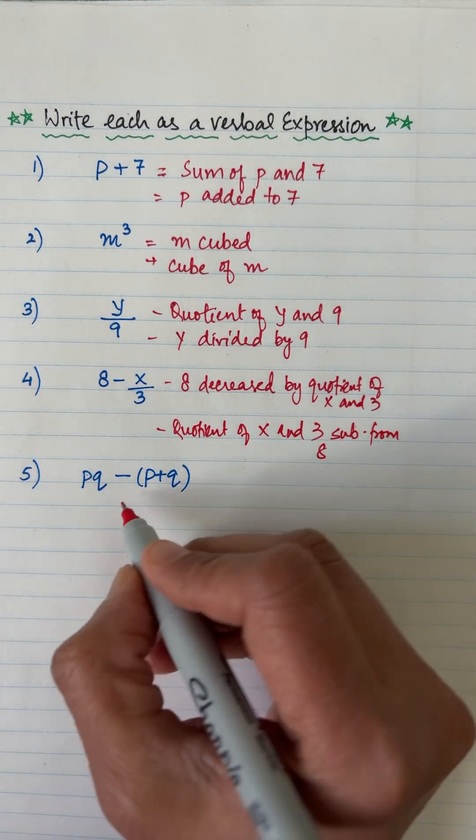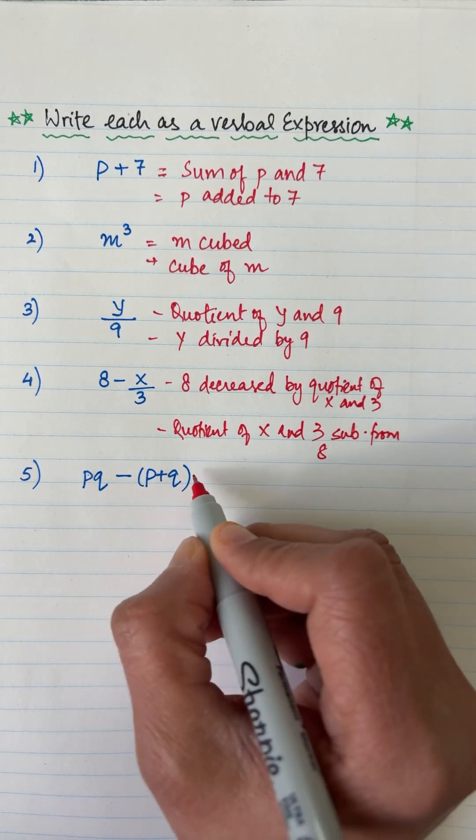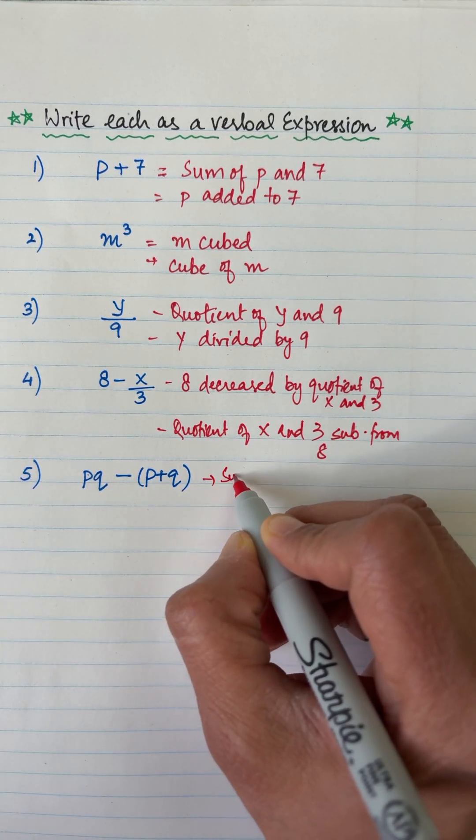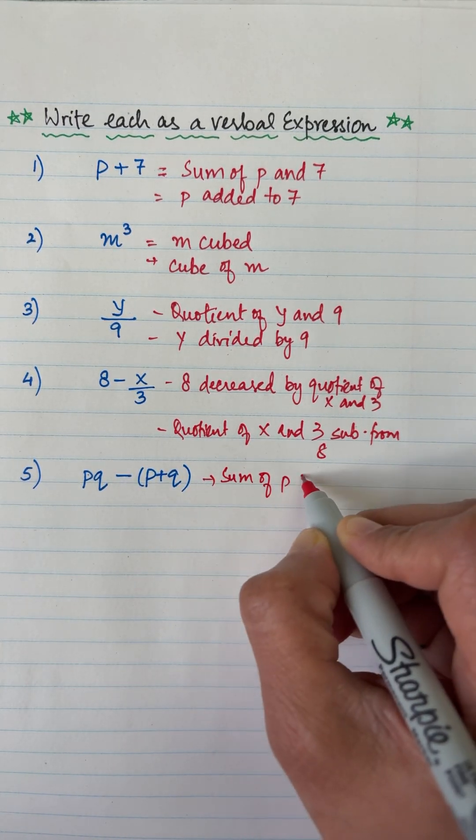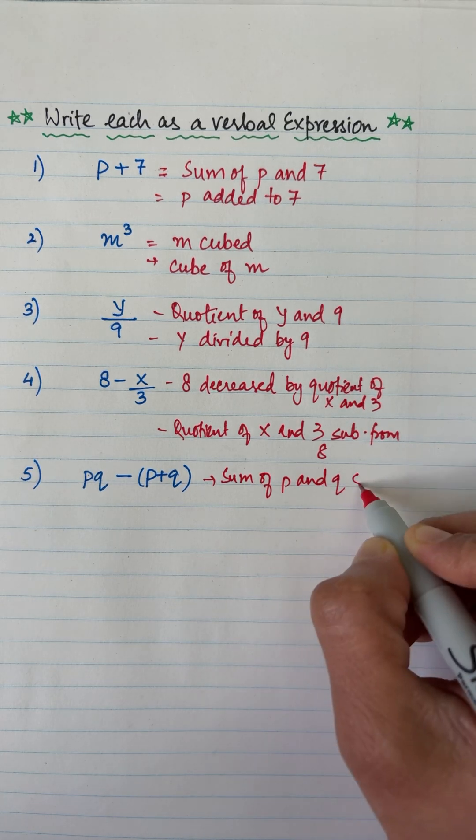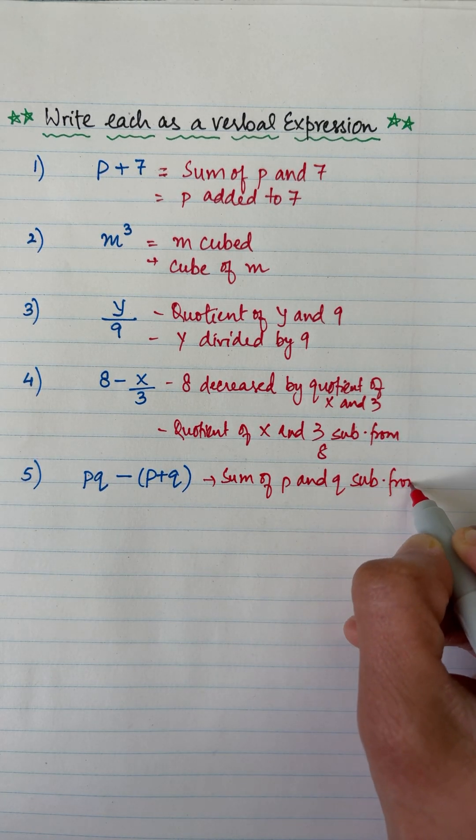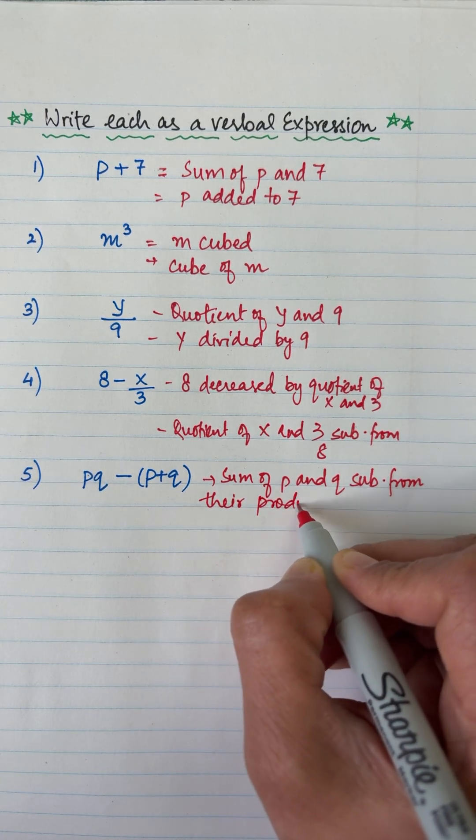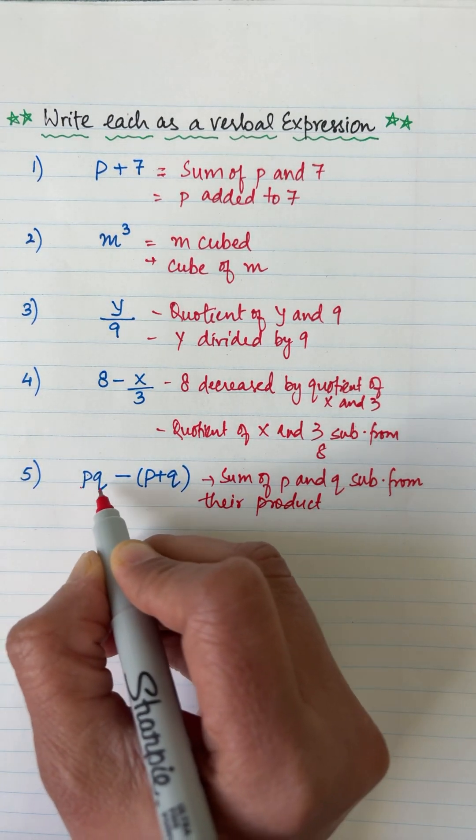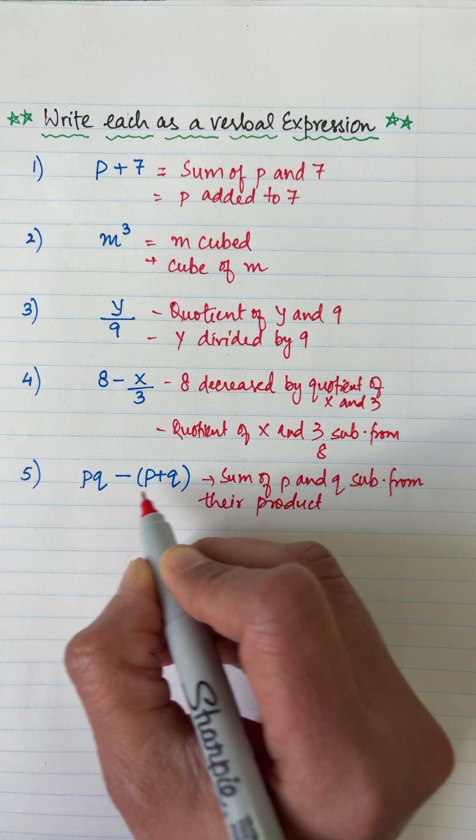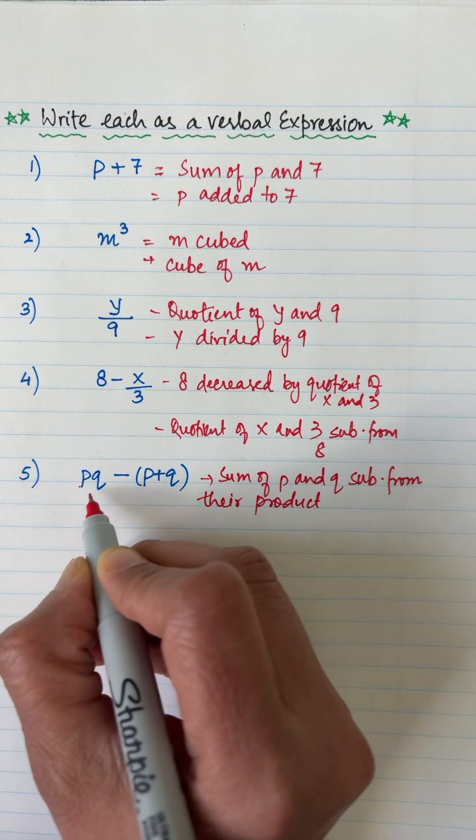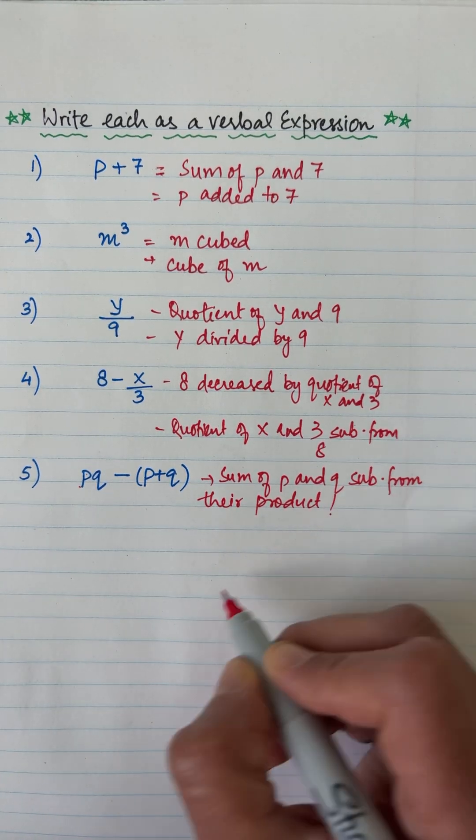Either of the ways are correct. pq minus in the bracket p plus q. So this is sum of p and q subtracted from their product. Product means multiply. So p and q are being multiplied minus p plus q, their sum. So sum is being subtracted from their product. That's it.